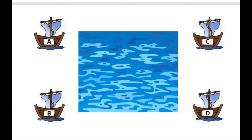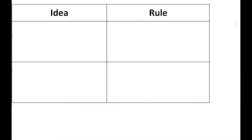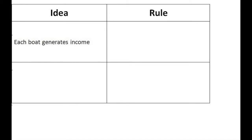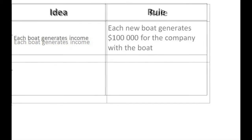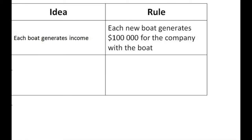For simplicity, Company A, Company B, Company C, and Company D. Before we can start, we have to make a few rules. Our first idea would be that every fishing boat you have can generate income. Leading to the rule: each new boat generates that company $100,000.